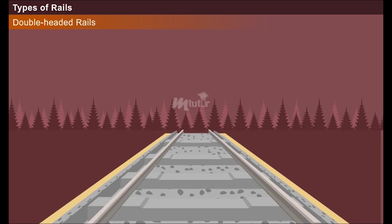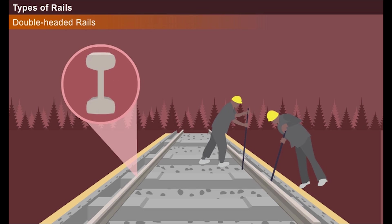These rails were widely used in olden days believing that if the rail head gets worn out, the rails could be inverted and reused. But it was later found wrong because along with the head, the foot also got corrugated under the impact of the wheel loads. Currently, double-headed rails are obsolete.